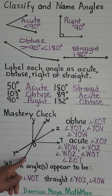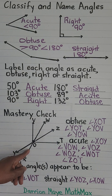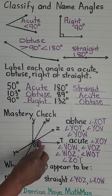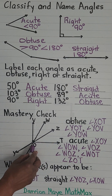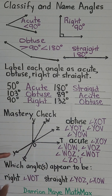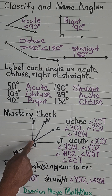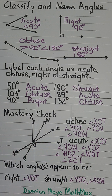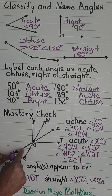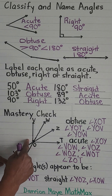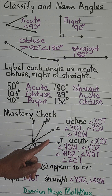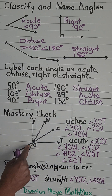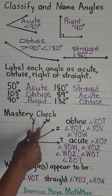For obtuse angles we have X-O-Z, X-O-T — more than a right angle, less than 180. We also have Y-O-T, Y-O-V, and Y-O-W — all of those are obtuse angles.